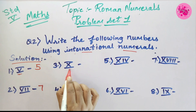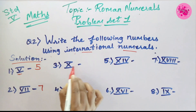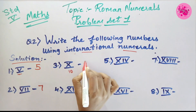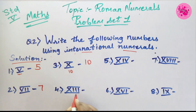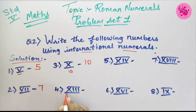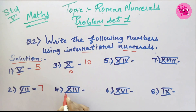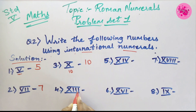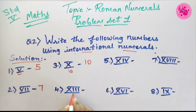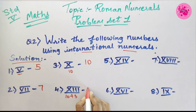Number 3: The Roman numeral X is given. X is the symbol of 10, so the answer is 10. Number 4: The Roman numerals X and III are given. X is the symbol of 10 and I is 1, so we add 10 plus 3, which gives the answer 13.